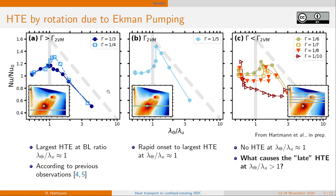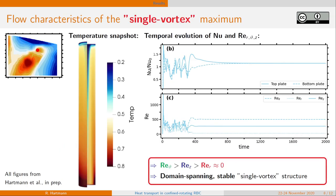So to answer this question, let us have a look on the flow characteristics of the single vortex maximum as well. Not surprisingly, we see in the temperature snapshot the domain spanning structure of the single vortex. And we see that in this case, cold fluid sinks in the center of the vortex, whereas at the sidewalls, hot fluid is rising.